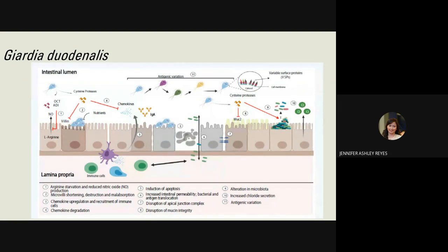Giardia infections have a wide range of symptoms including abdominal cramps, nausea, fatty diarrhea, and can be subclinical. Most of the time, chronic infection causes a disturbed intestinal balance with changes in the microbiota. There will be villous blunting, possible nutrient malabsorption, leaky gut, and stunted growth in children.